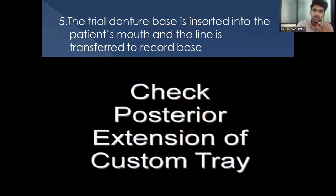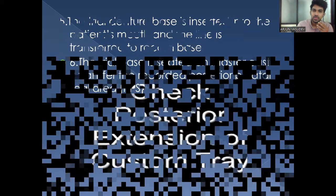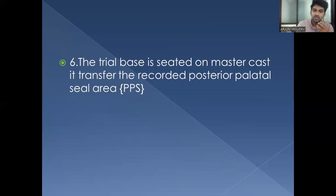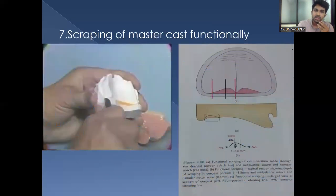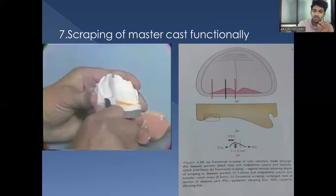The trial denture base is inserted into the patient's mouth and the marked lines are transferred to the record base. The posterior extension of the custom tray is checked and trimmed. The trial base is then seated on the master cast, transferring the recorded posterior palatal seal area to the cast. The cast is scraped in the PPS area to a depth of 1 to 1.5 mm, with the deepest scraping more towards the posterior vibrating line, creating a depression across one-third of the area from anterior to posterior vibrating line.